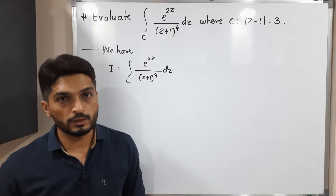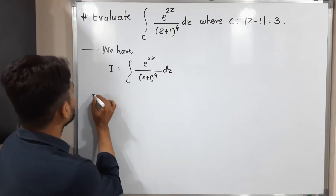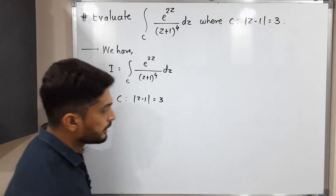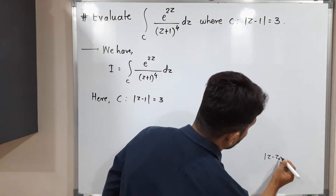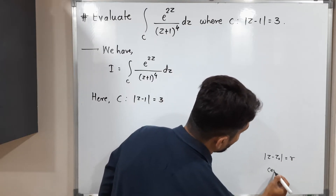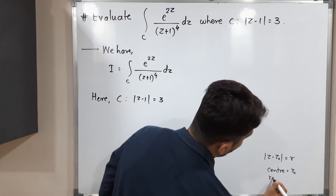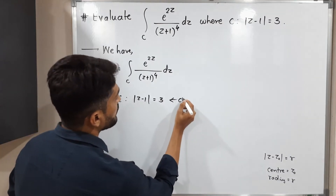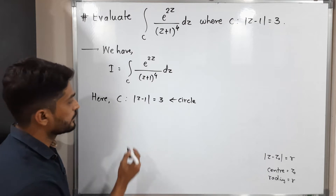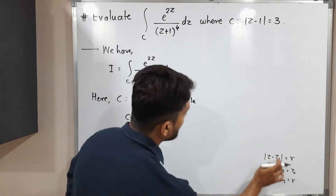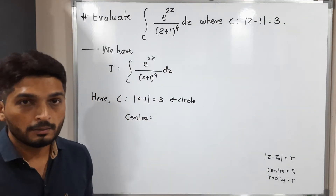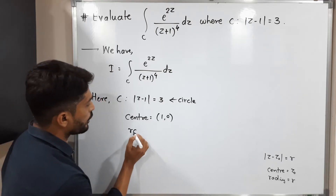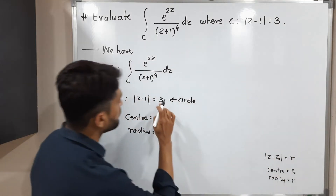Our main focus is on the closed curve C. Here C is given by |z − 1| = 3. The standard equation of a circle is |z − z₀| = r, with center z₀ and radius r. Comparing, the center is (1, 0) — real part 1, imaginary part 0 — and the radius is 3.